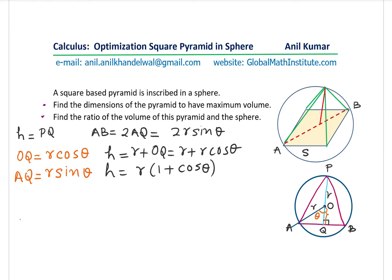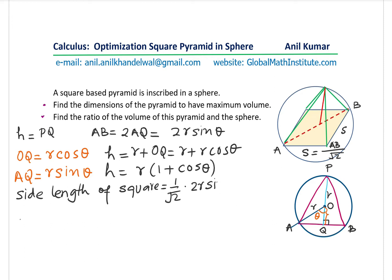Now, what is the side length S of the square? Since volume equals base area times height, the side length S equals AB divided by √2, which is AB/√2. That gives the side length S = √2·R·sinθ.